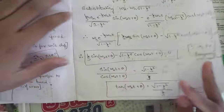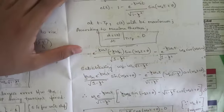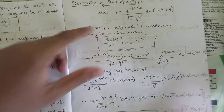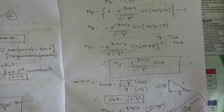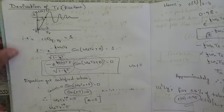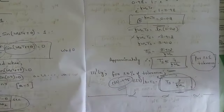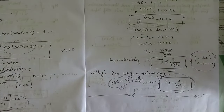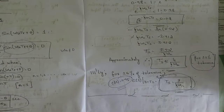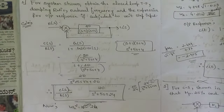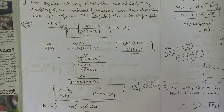The derivations for peak time, peak overshoot, rise time, and settling time have all been discussed using the output response c(t). Any one or two of these derivations will definitely be asked in the exam. All derivations are available in our channel's module 3 video lecture series.